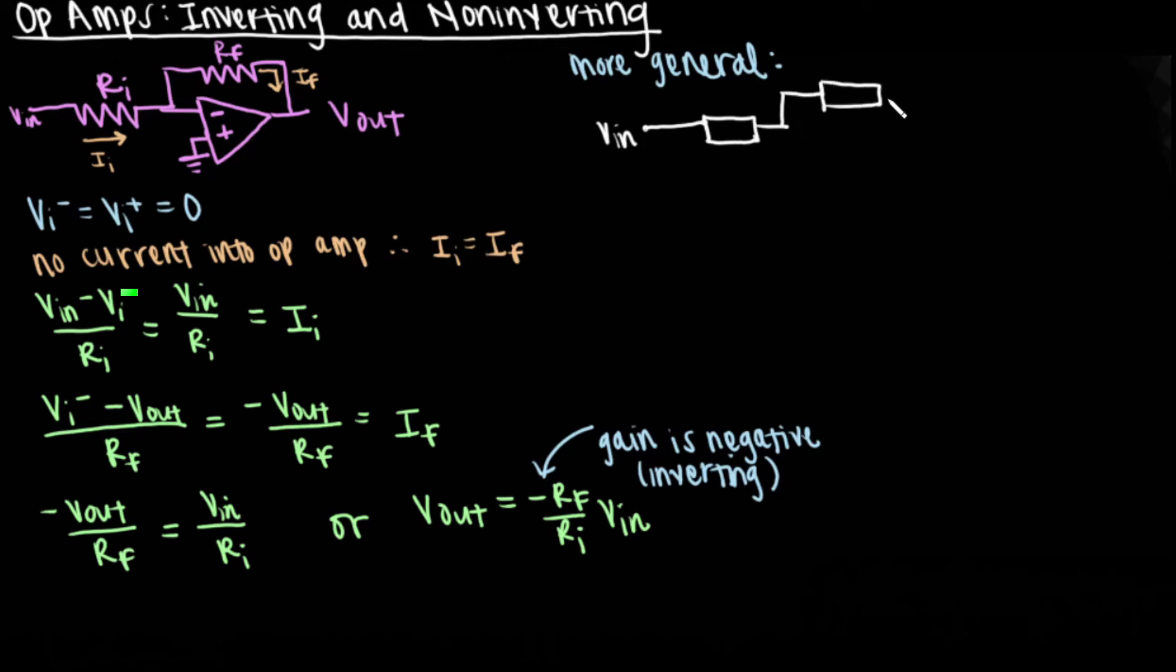I'll now show you the more general version. Inverting circuits are represented by any combination of circuit elements to create impedances ZI and ZF. The transfer function dependent on frequency is Vout divided by VN equals negative impedance F divided by impedance I.